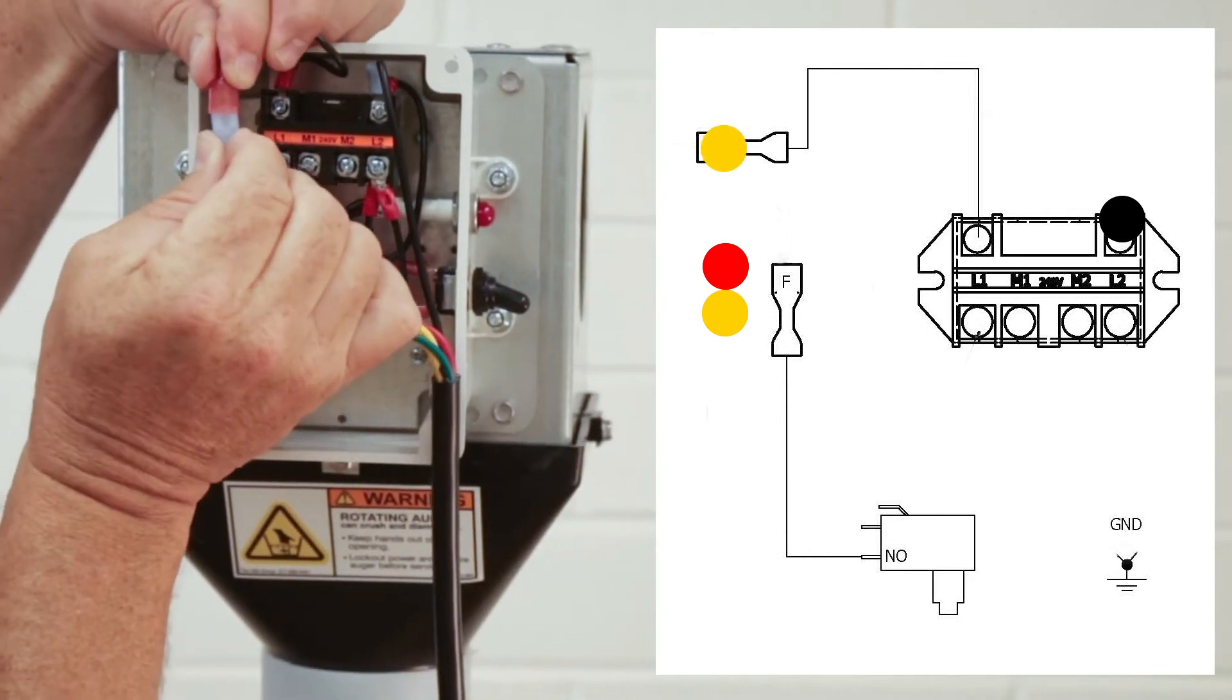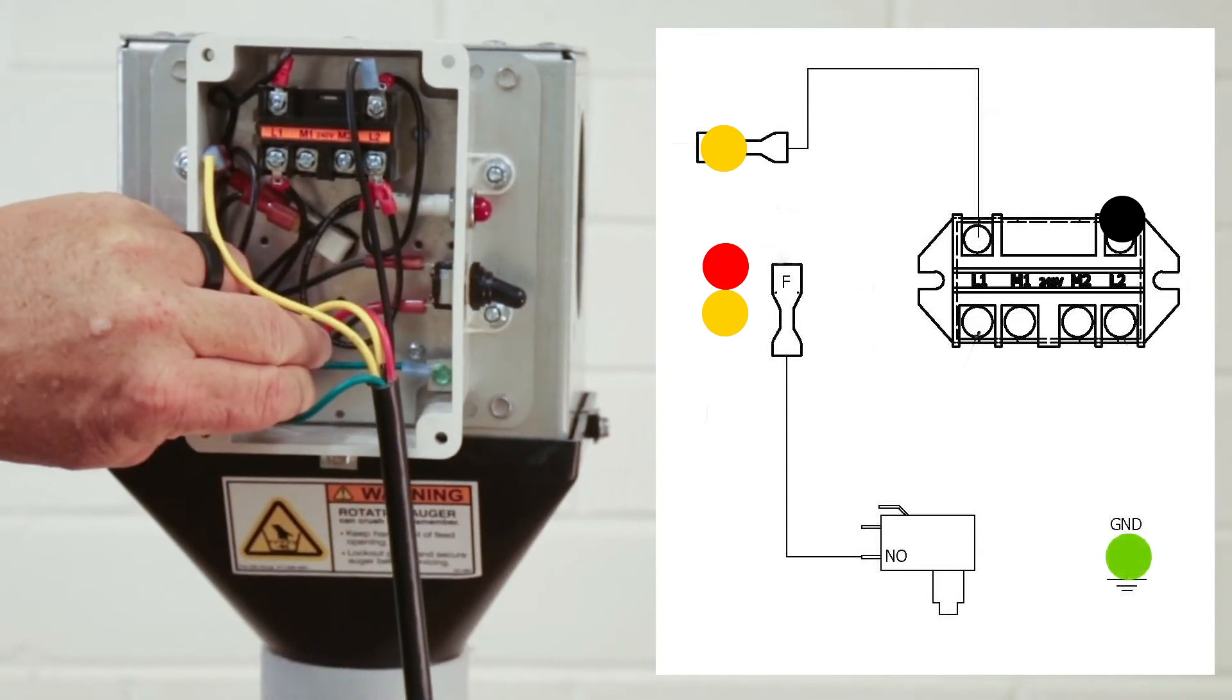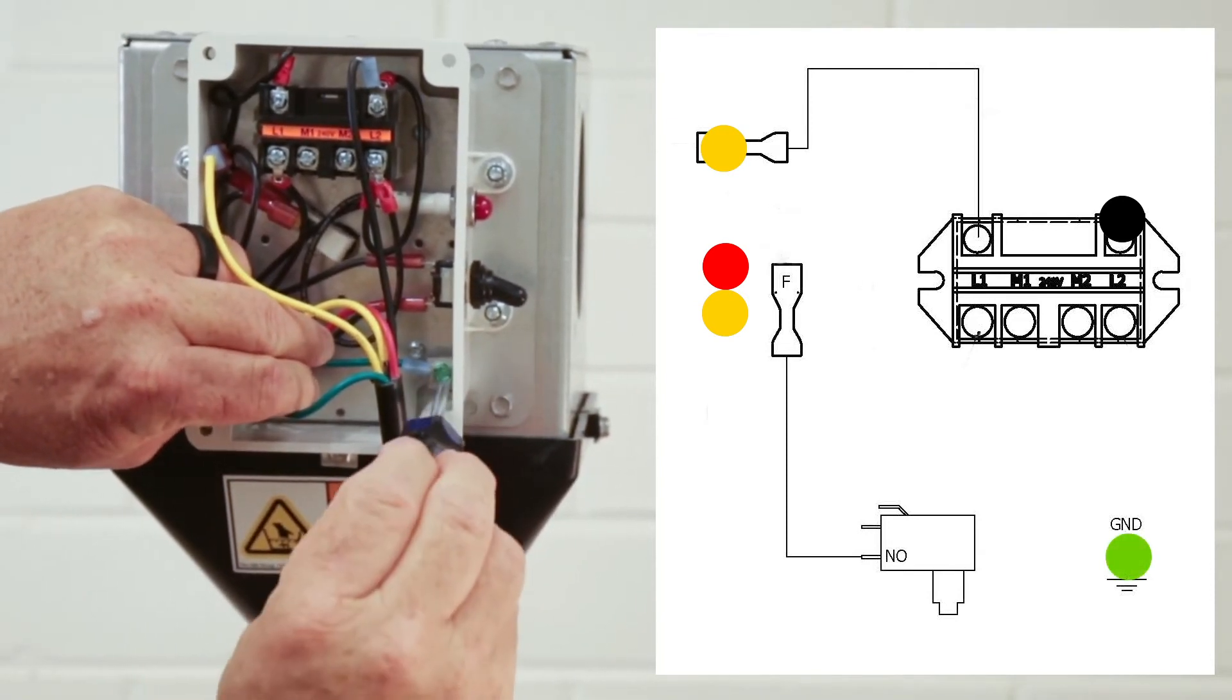Now take the second yellow wire and connect it to the L1 slot on the AP terminal. Last, connect the green wire to the green ground screw of the AP control box.